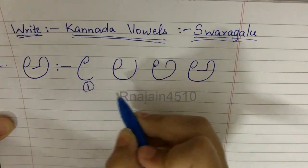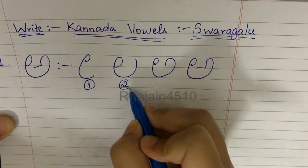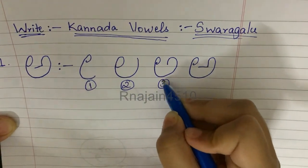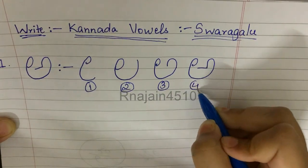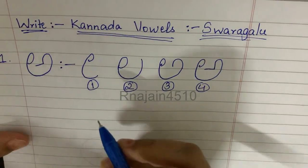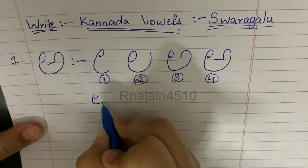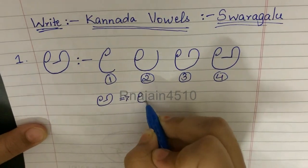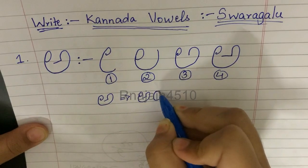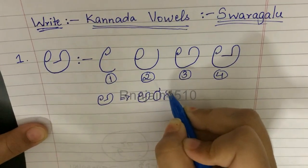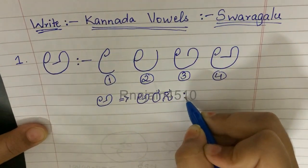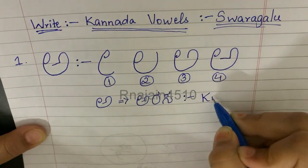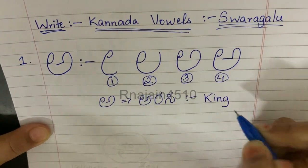So this is the first step: E. Second step: U. Third step: semicircle. And fourth step: sleeping line. O for Arasa. Arasa in English means king.